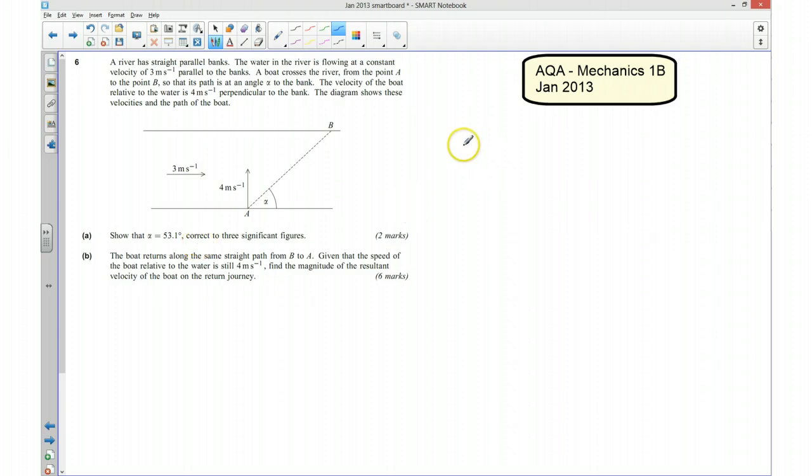So I'm going to start off by drawing a diagram. I know that I've got a speed in that direction of 4 meters per second, and that's the boat relative to the water. I also know that I've got a speed in that direction of 3 meters per second, and that's the river flowing. And my resultant is going to be in this direction like so. And we want to know the angle that that makes with the bank.